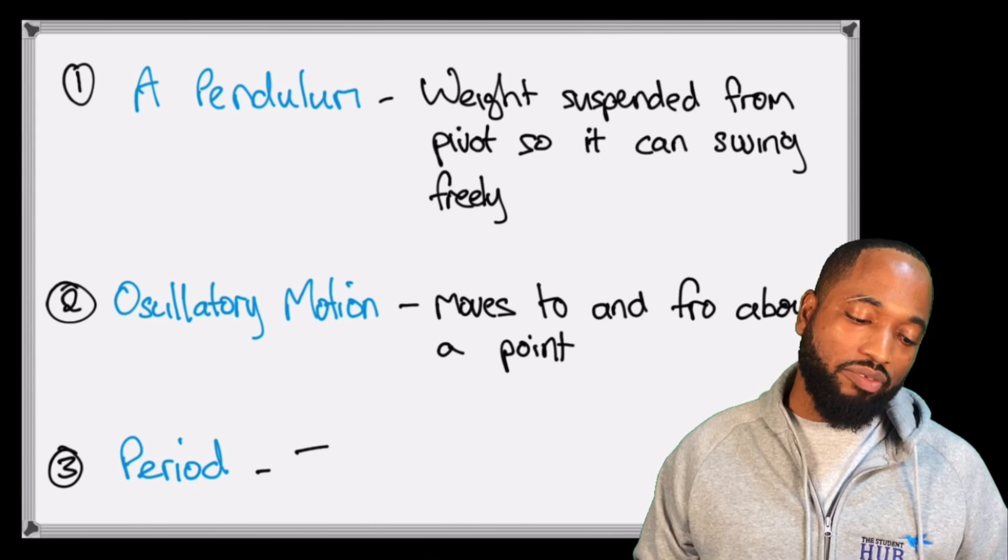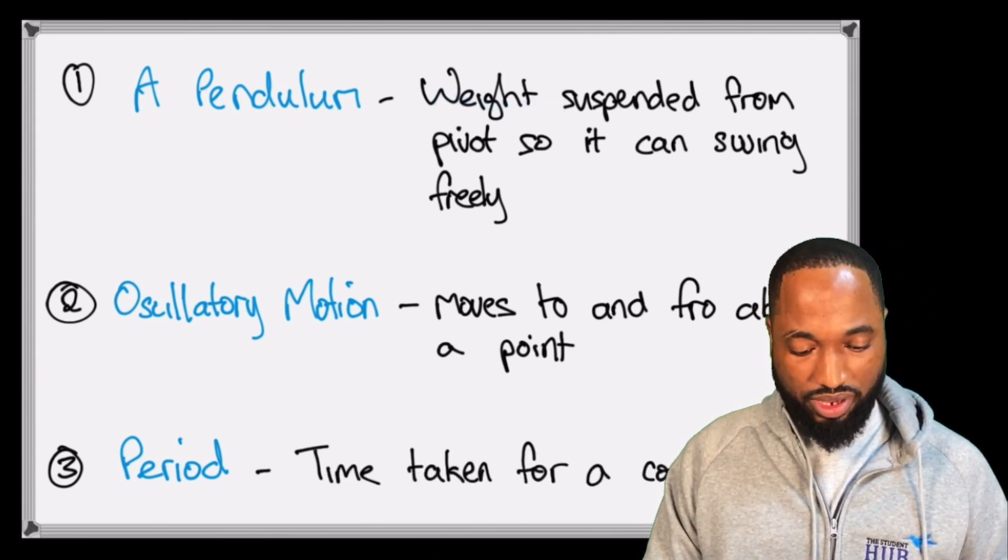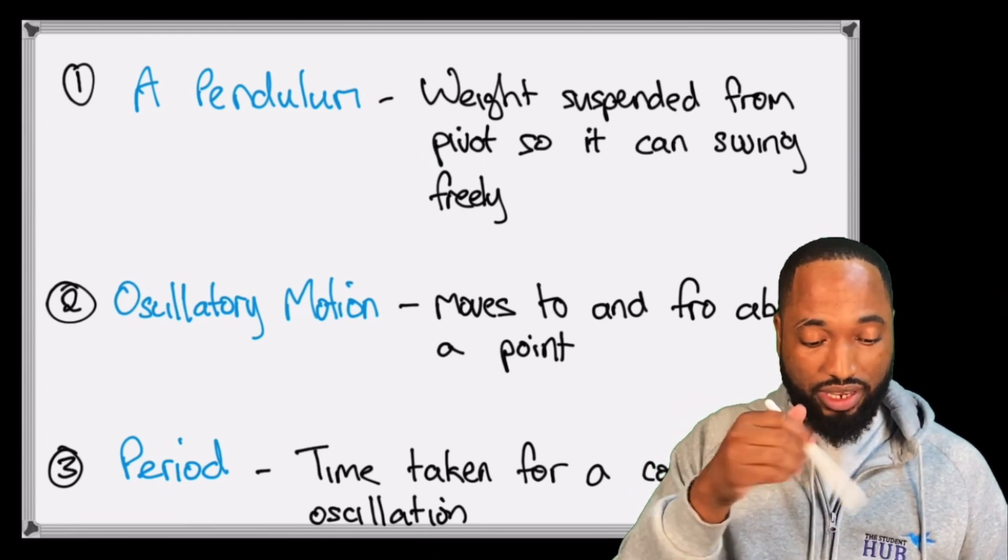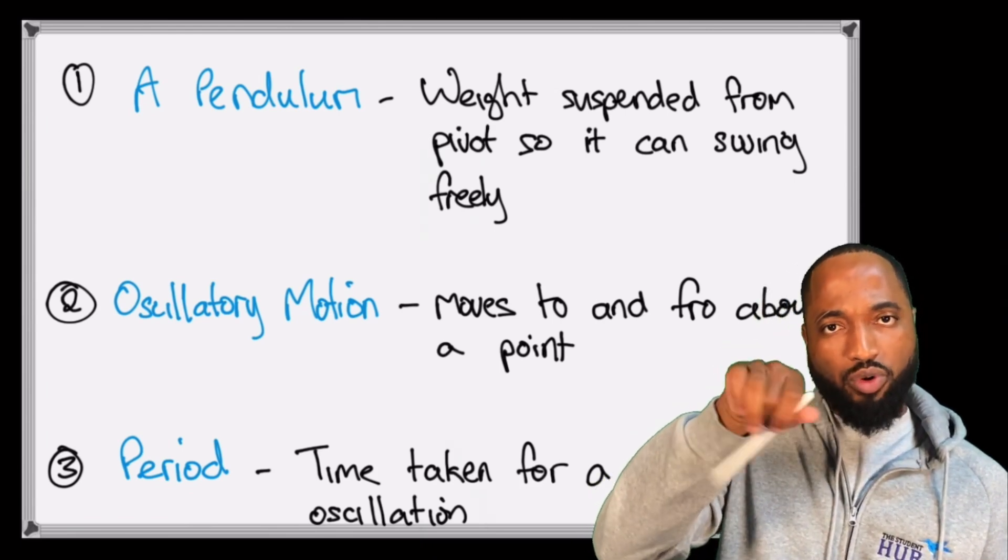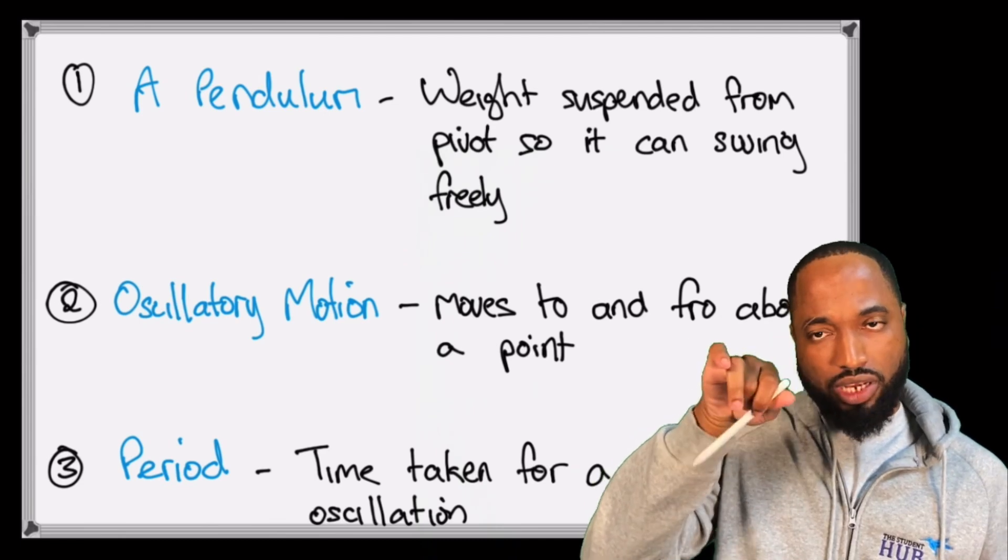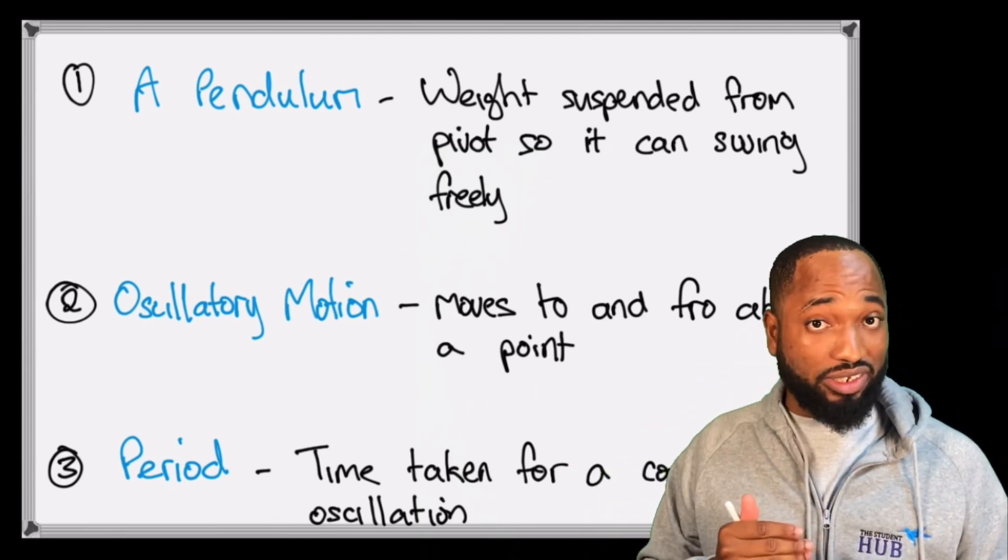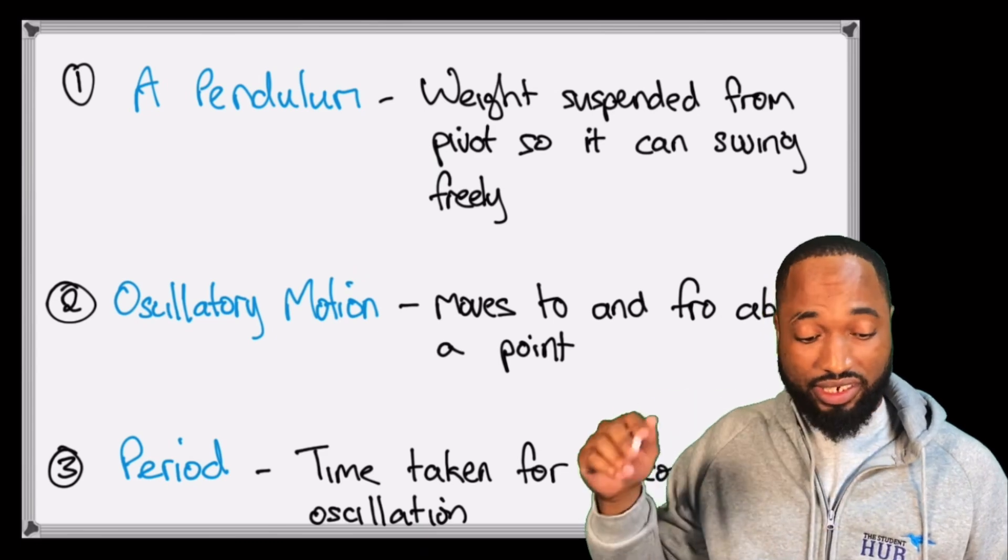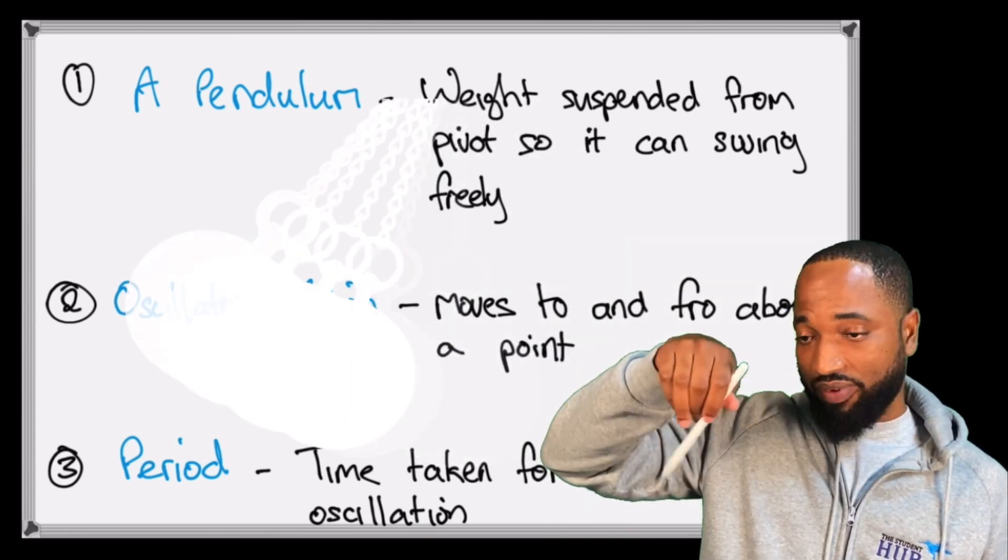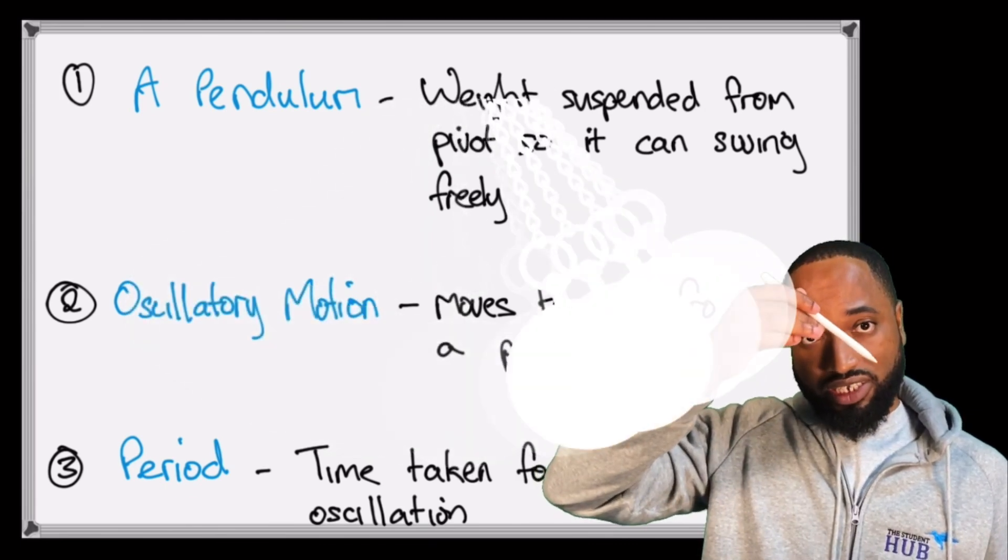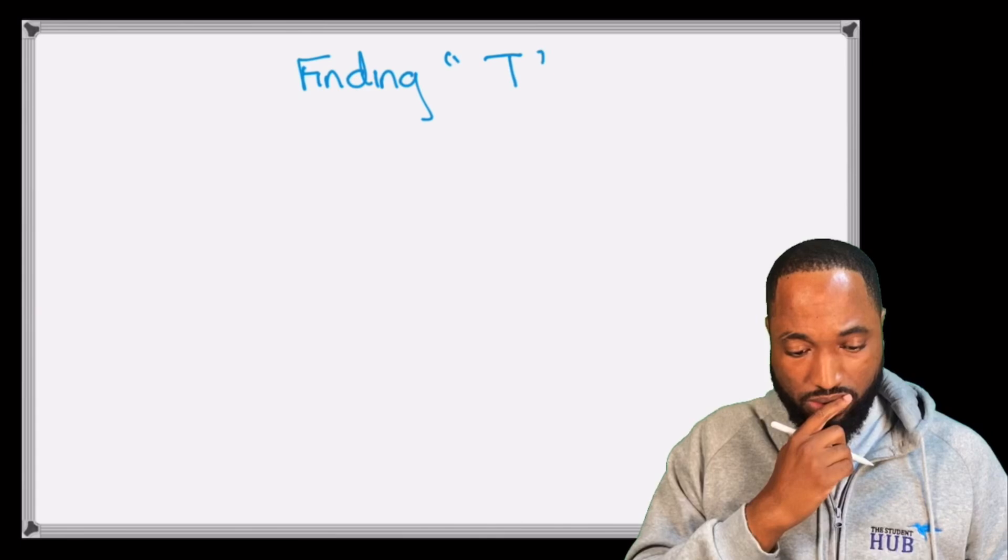A simple definition for a pendulum will be: a weight suspended from a pivot so that it can swing freely. It's suspended from a pivot so that it can swing freely, and it moves to and fro about a central point. And that's oscillatory motion - it's oscillating about a point. And any oscillation, we can develop the term period, and it's actually the time taken for one complete oscillation.